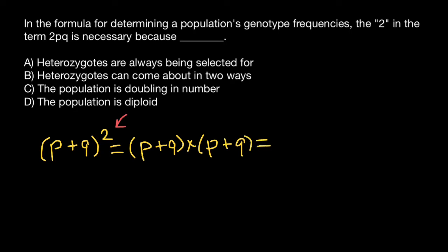Take a look. p times p is going to be p squared. So p squared plus p times q is going to be pq.